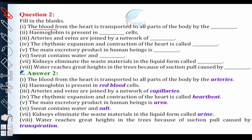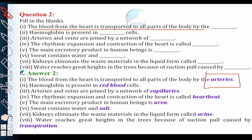Question number 2 — fill in the blanks. The blood from the heart is transported to all parts of the body by the arteries. Hemoglobin is present in red blood cells. Arteries and veins are joined by a network of capillaries.